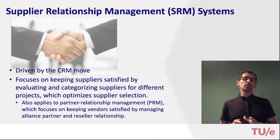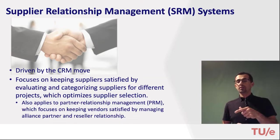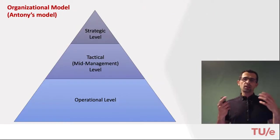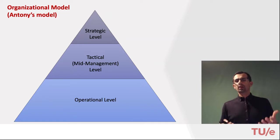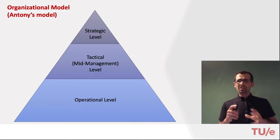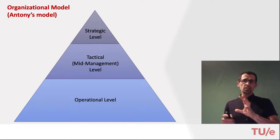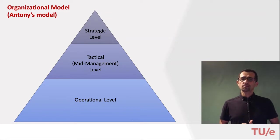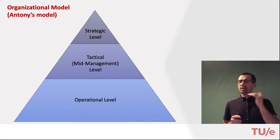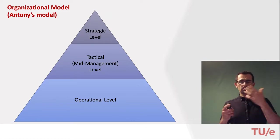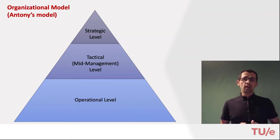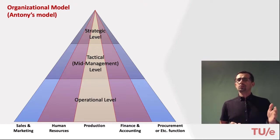I will not go into the details of these systems, but before moving to the next system, let me provide some background on the common organizational model and the characteristics of different levels in terms of decision and information requirements. What we see here is the organizational model featuring three levels: operational, tactical, and strategic. Organizations are typically structured into functional units like sales, marketing, human resources, production, and finance.